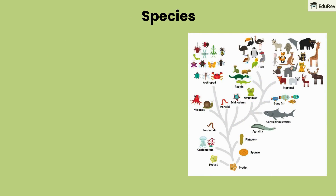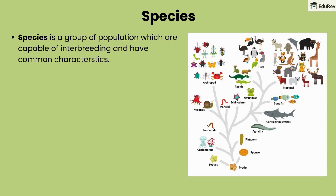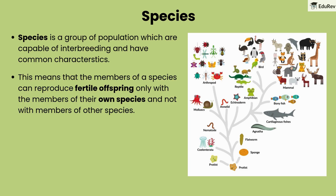Let's now learn about species and their types. A species is a group of populations that are capable of interbreeding and have common characteristics. Members of a species can reproduce fertile offspring only with members of their own species, and not with members of other species.